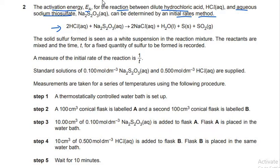The solid sulfur formed in this reaction is seen as a white suspension in the reaction mixture. The reactants are mixed and the time t for a fixed quantity of sulfur to be formed is recorded, and a measure of the initial rate of the reaction is 1/t. That's how we measure the rate.